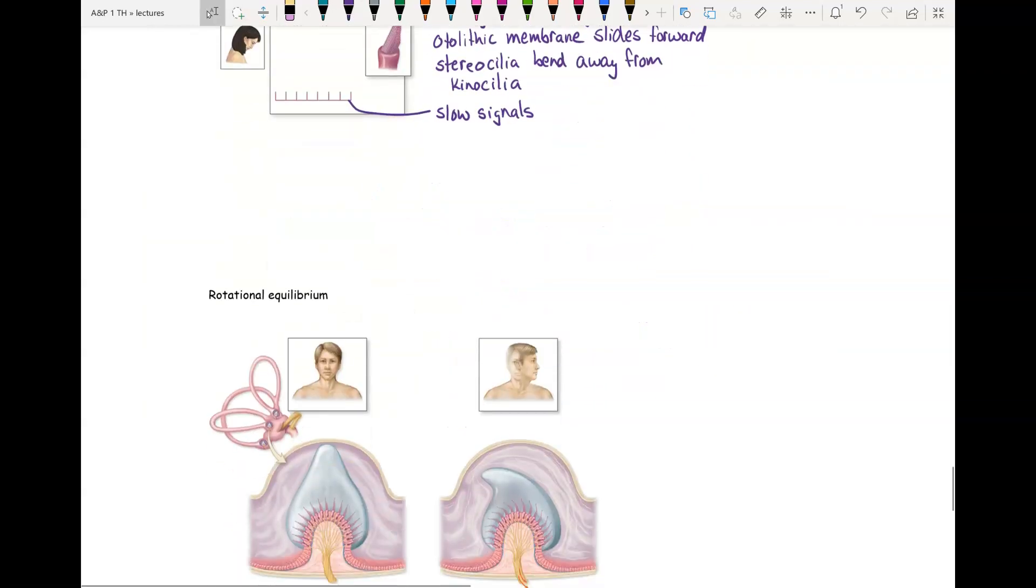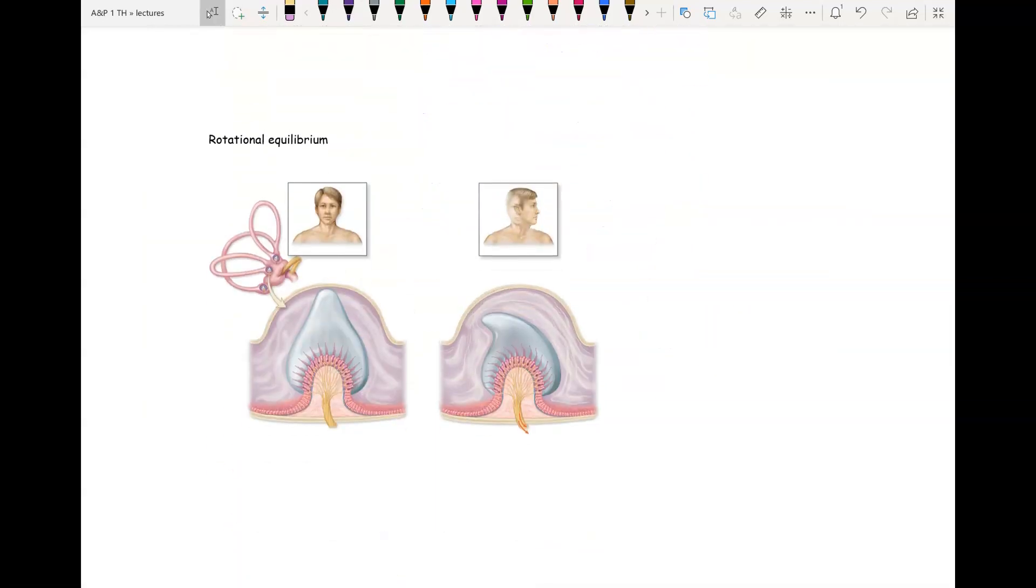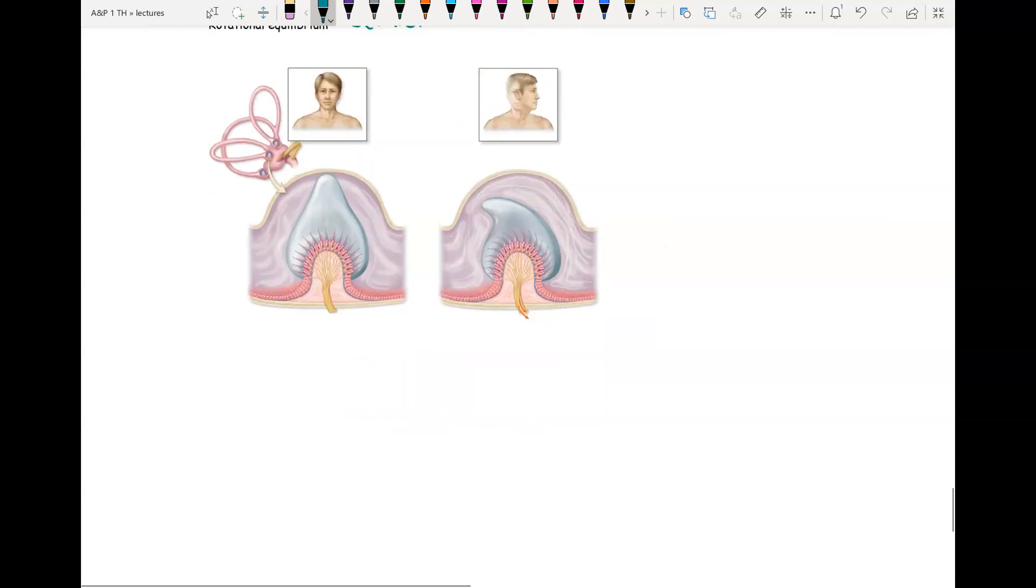Now let's look at rotational equilibrium. This occurs in your semicircular canals. This is how you sense rotational movement, when you turn or you spin. Your semicircular canals have fluid.